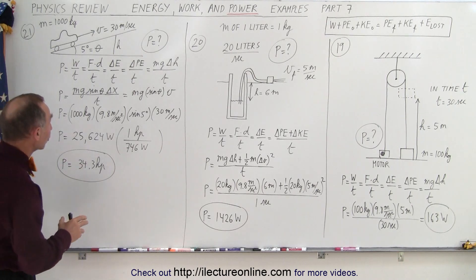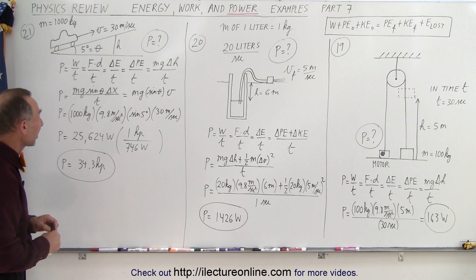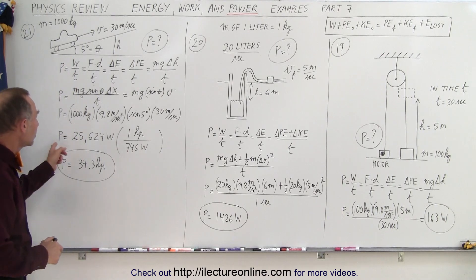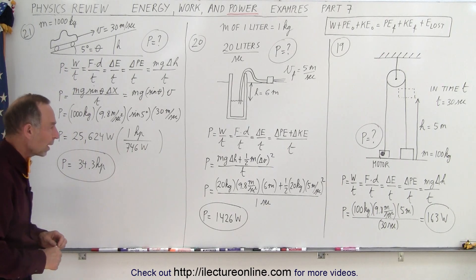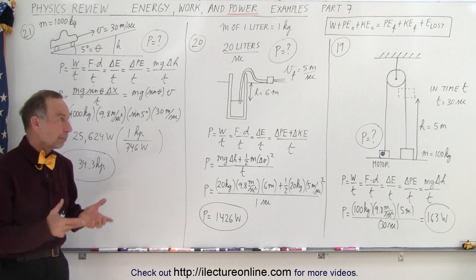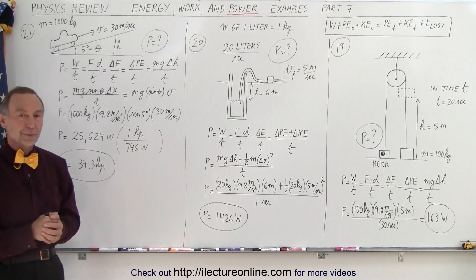But the net requirement to push the car up the incline at that speed of 30 meters per second, which is kind of freeway speed, you need about 34 horsepower. And that is how we calculate the power requirements in three very good examples.